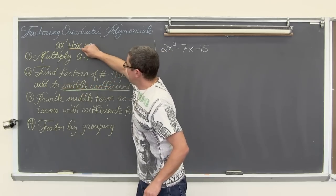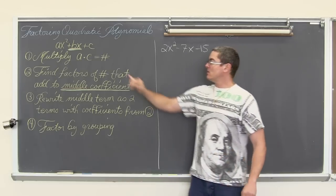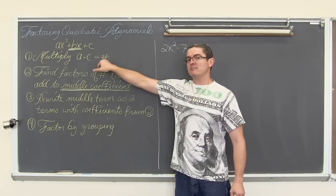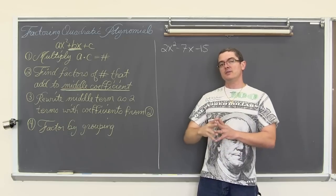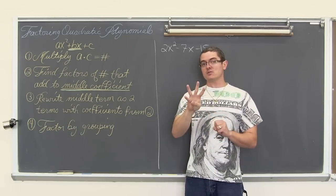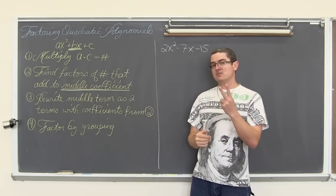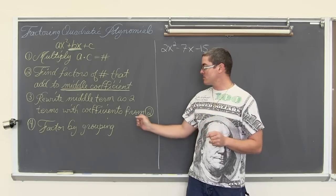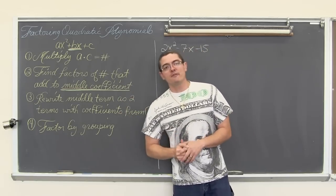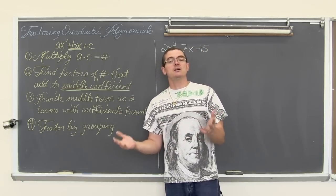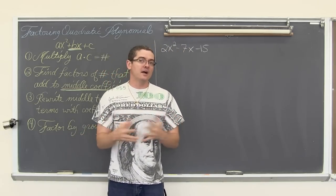We want to match that middle term. When we figure out what the factors are of that product that add up to the middle term, we are going to rewrite this trinomial into four terms by taking the middle term and writing it as two terms being added together using the coefficients that we got from step two.